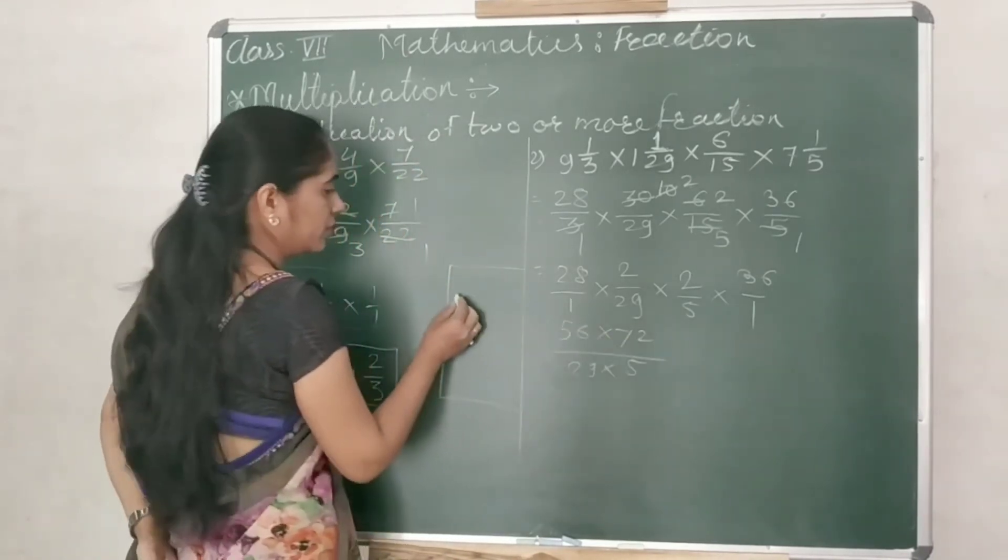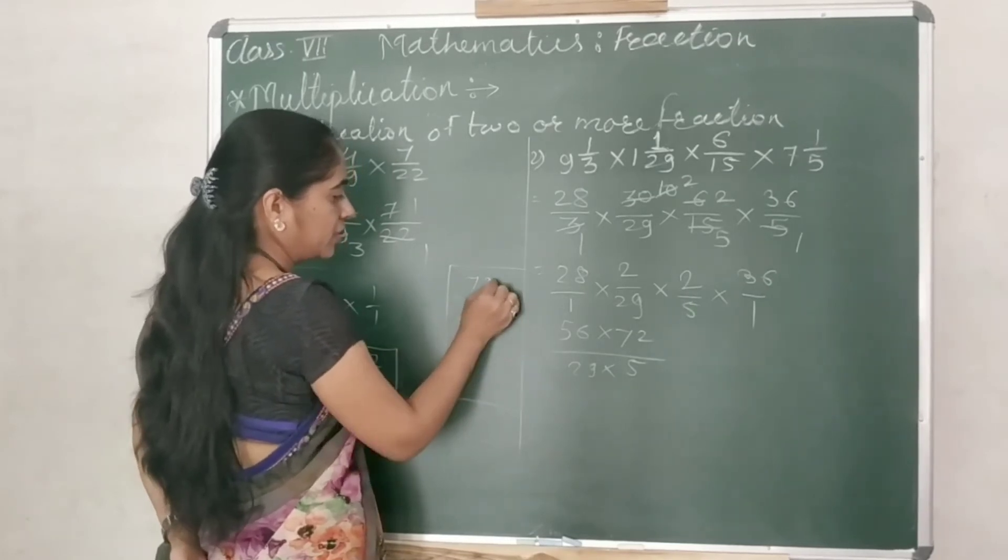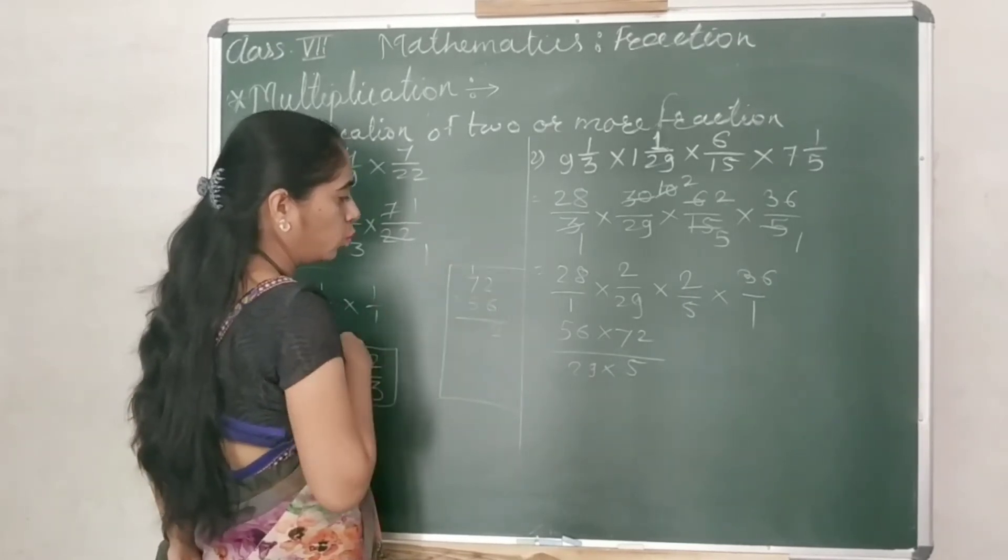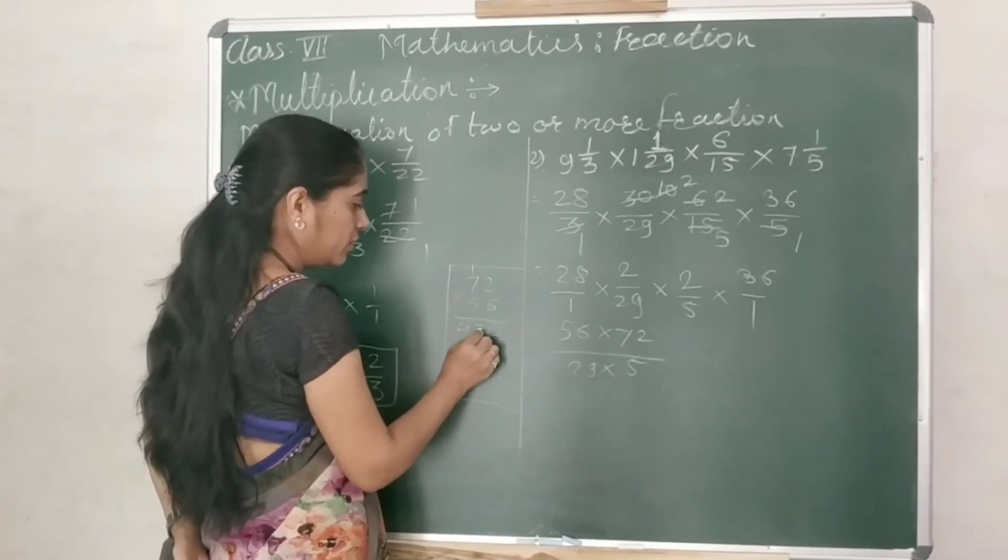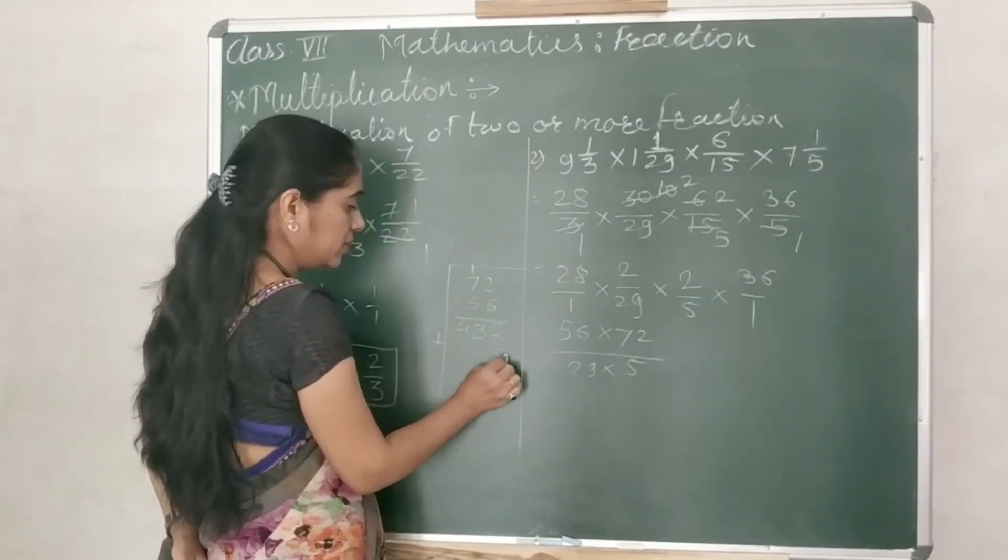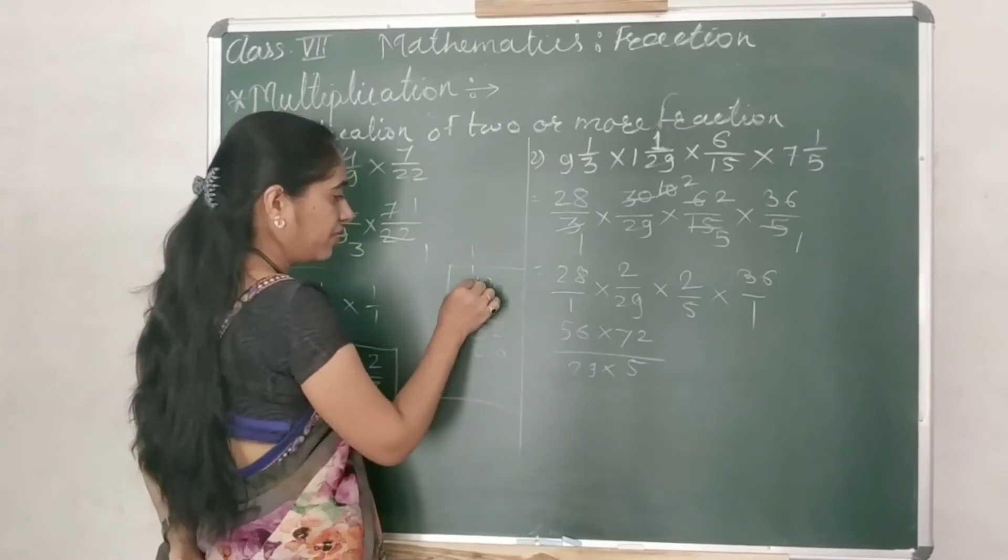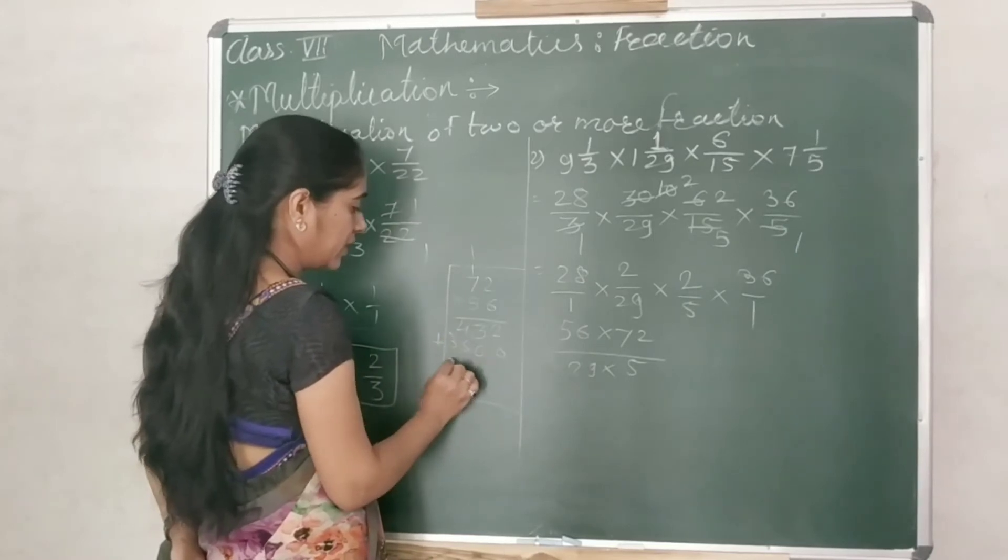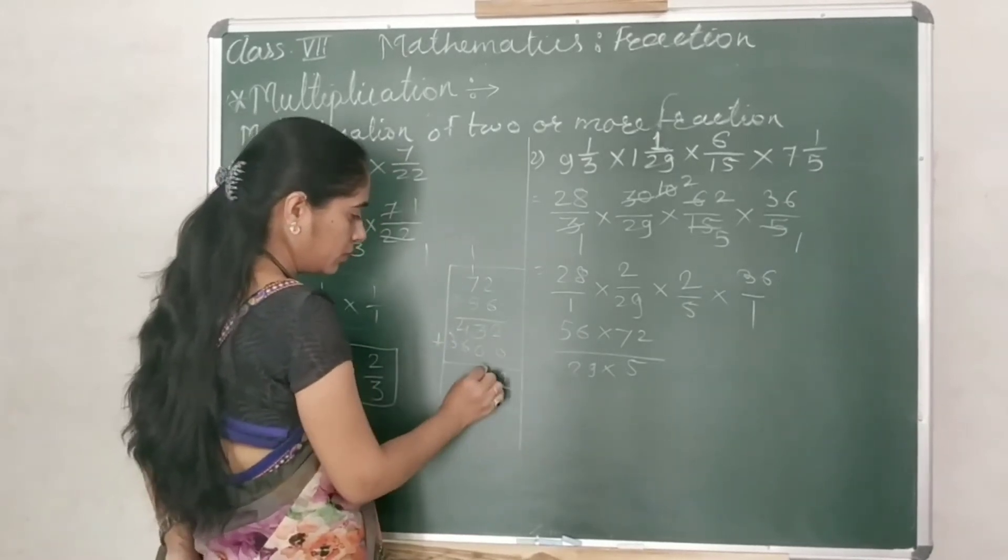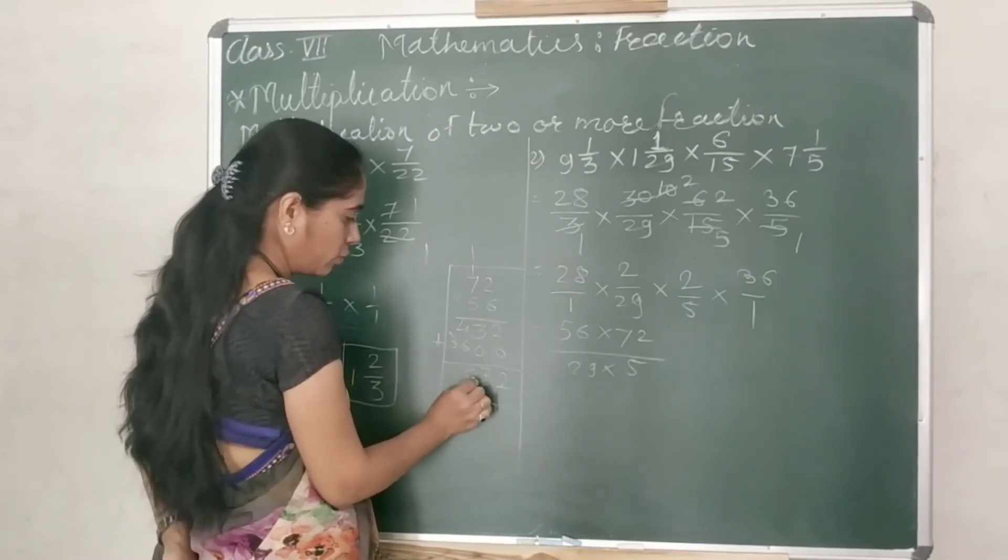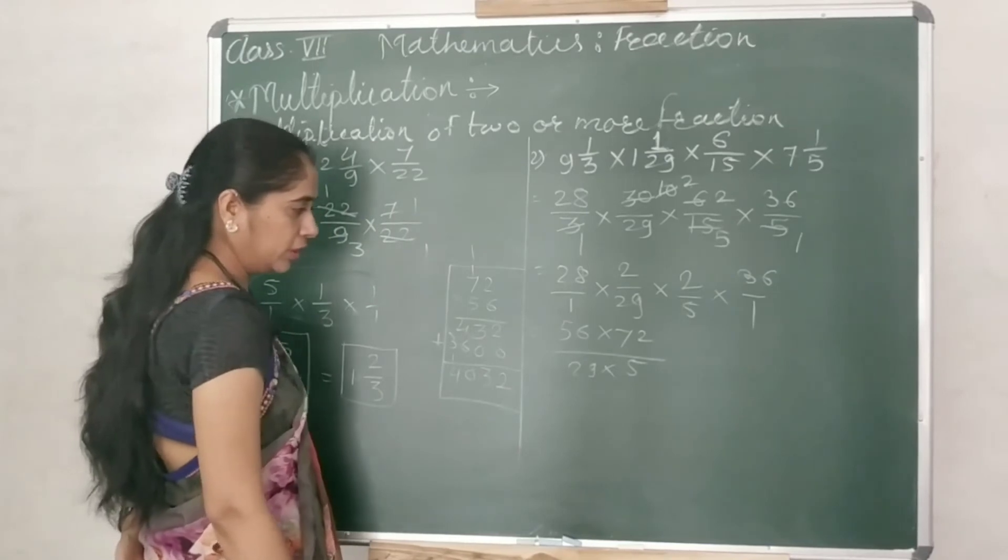First we will solve this. 72 multiplied by 56. 6 twos are 12, carry 1. 6 sevens are 42, plus 1, 43, plus 0. 5 twos are 10, carry 1. 7 fives are 35, plus 1, 36. Now 2, 3, 6 plus 4, 10. That's 0. 4032.